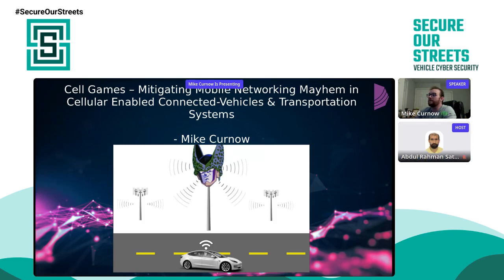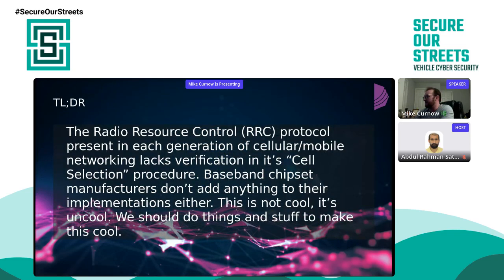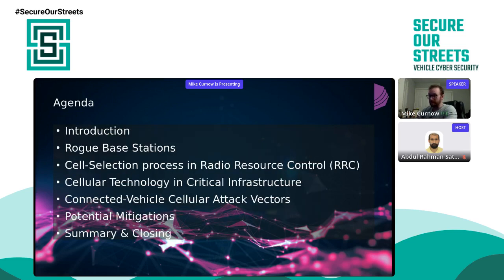Welcome to Cell Games: Mitigating Mobile Networking Mayhem in Cellular Enabled Connected Vehicles and Transportation Systems — bit of a long-winded title. I tend to title things exactly as they are. Just a quick TLDR: I'll be talking about gaps in the radio resource control protocol for cellular networking on RAN. The agenda covers my short introduction, rogue base stations, cell selection process in RRC, cellular technology and critical infrastructure, connected vehicle cell attack vectors, potential mitigations, and a summary and closing.